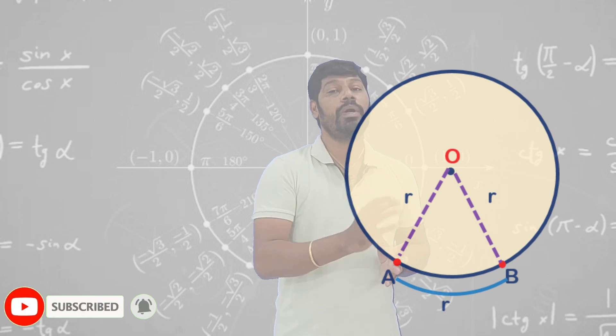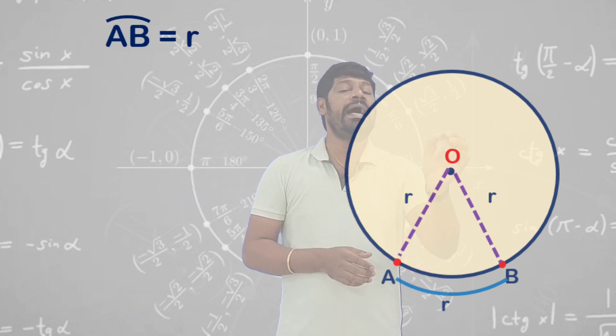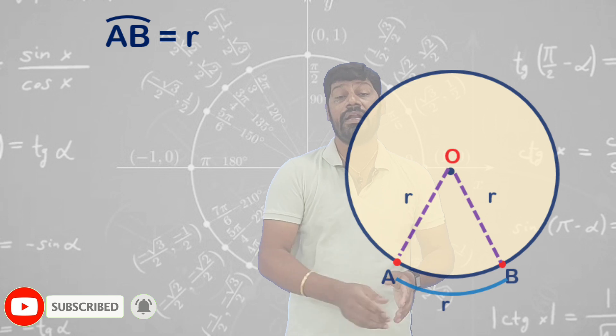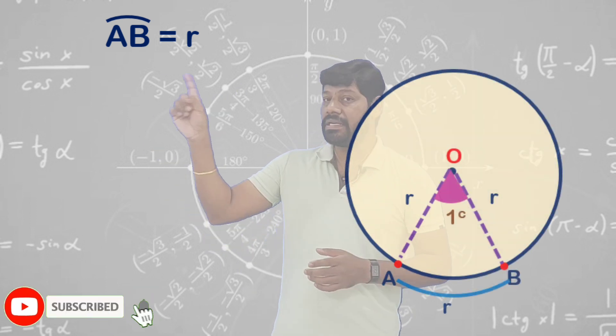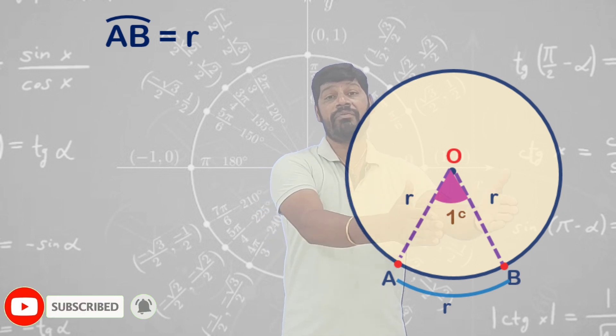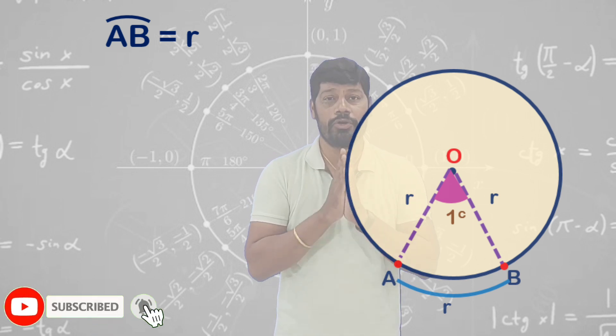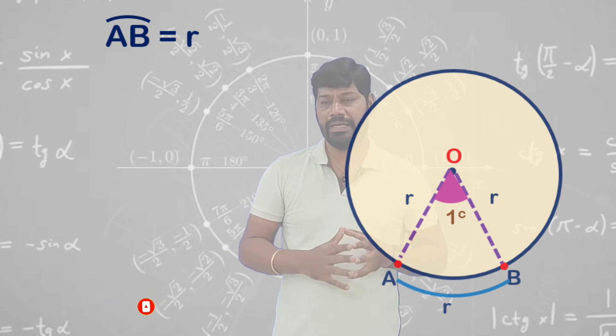Length of arc AB equals radius. Then the angle between both the radii, or the angle at the center of this small sector, is nothing but equal to one radian. One radian is the angle between both the radii such that AB arc length equals radius. This is the most interesting and important thing you need to understand in understanding pi radians equal to 180 degrees.